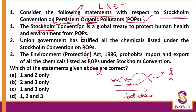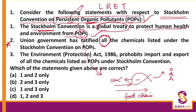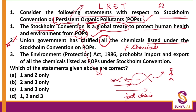Statement one: Stockholm Convention is a global treaty to protect human health and environment from POPs — this is a correct statement. Statement two: the Union Government has ratified all the chemicals listed under the Stockholm Convention on POPs. This statement is wrong. Initially there were seven chemicals; right now under the Stockholm Convention there are twelve chemicals, and the Union Government has ratified only the previous seven, not all. Therefore statement two is wrong.